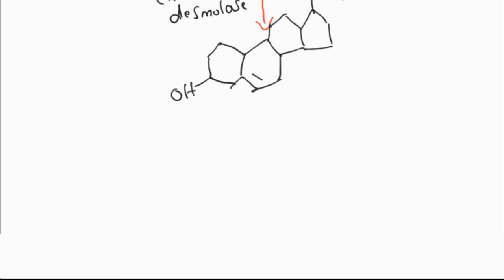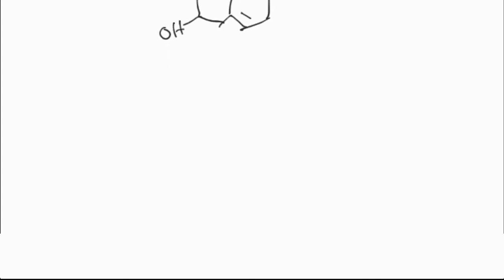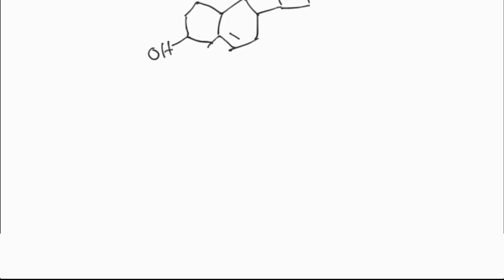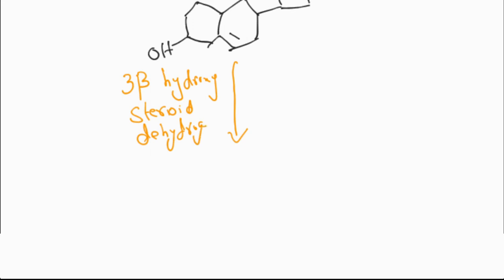Pregnenolone is further processed by different enzymes for the synthesis of corticosterone, cortisol, and androstenedione, which are the hormones of the adrenal cortex. Firstly, I will explain about the conversion of pregnenolone into corticosterone. After the synthesis of pregnenolone, the enzyme 3-beta-hydroxysteroid dehydrogenase causes the conversion of pregnenolone into progesterone.